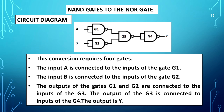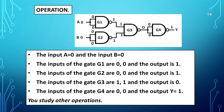NAND gates to NOR gate circuit diagram is shown. This conversion requires four NAND gates. Input A is connected to the inputs of G1, and input B is connected to the inputs of G2. The outputs of G1 and G2 are connected to the inputs of G3. The output of G3 is connected to the inputs of G4. The output is Y. Operation: When A=0 and B=0, G1 output is 1, G2 output is 1, G3 output is 0, and the inputs of G4 are 0,0 giving output Y equal to 1.